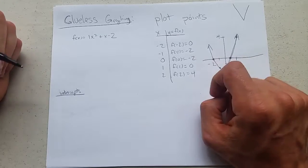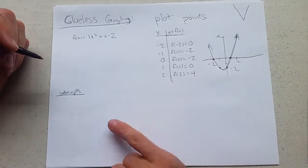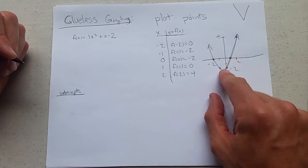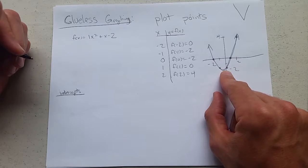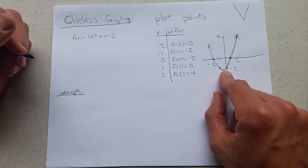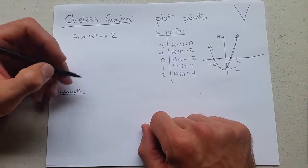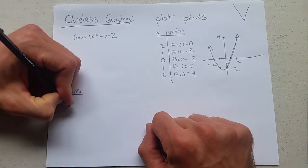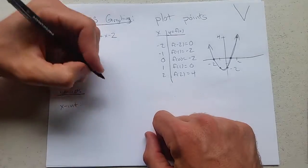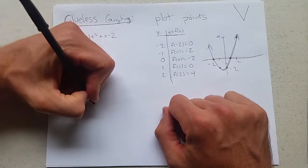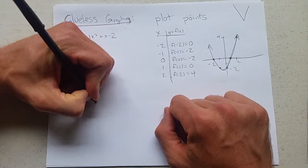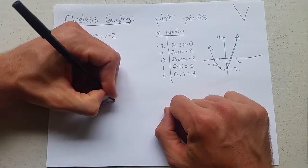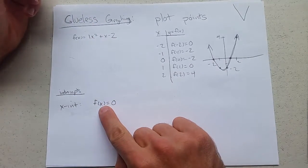Now intercepts - how do I find intercepts? I have a graph, I can see intercepts, so I can write them down right away. But let's talk about how to find the intercepts if you don't have a graph - all you have is the function. So x intercept: what does that mean? You're on the x axis. That does not mean x equals 0, what that means is f of x equals 0.